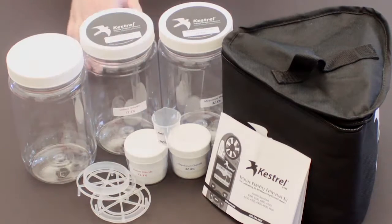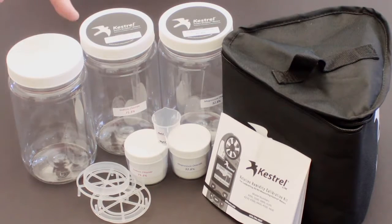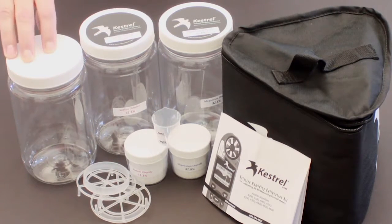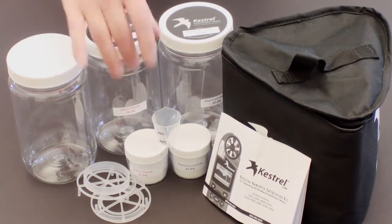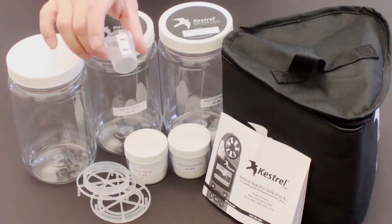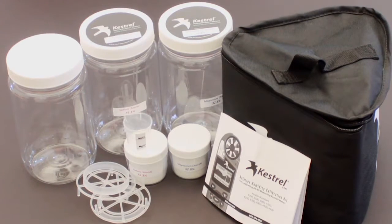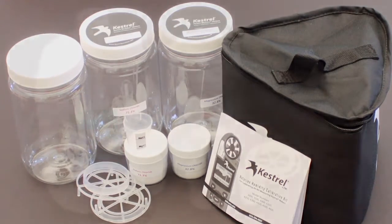Both come with grids that you will put in the jar, and one jar that will be filled with tap water to stabilize the temperature. Everything is color-coded to make things easier. And finally, we have a measuring cup that will help us prepare these salts for the RH calibration.